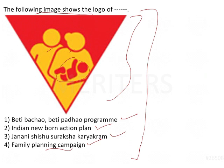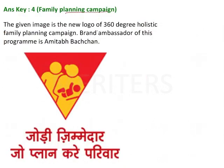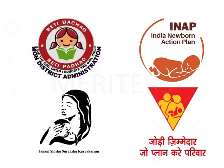Looking at this symbol, it represents the Family Planning Campaign — a 360-degree holistic family planning campaign. The brand ambassador is Mita Bachin. The symbol depicts one parent symbol and one child symbol, representing the family planning campaign.